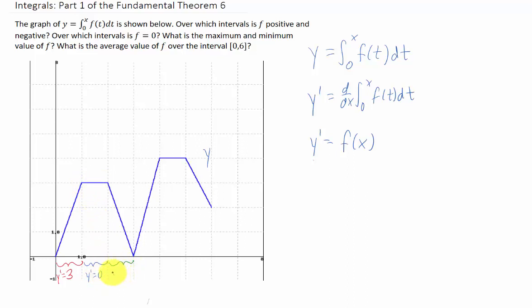On the next interval from 2 to 3, it looks like our slope is negative 3. On the interval from 3 to 4, our slope appears to be 4. From 4 to 5, our slope appears to be 0. And on our interval from 5 to 6, our slope appears to be negative 2.